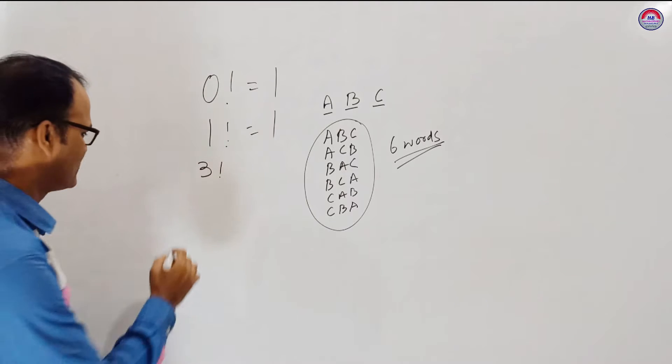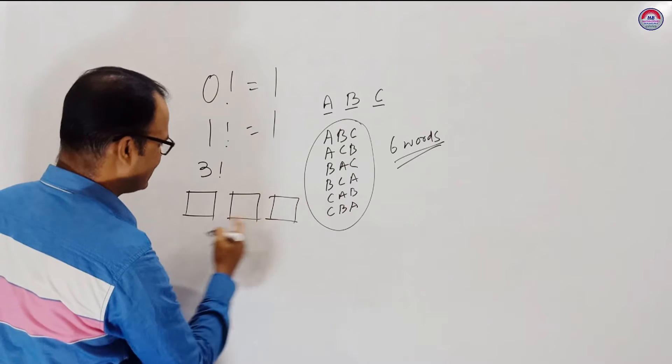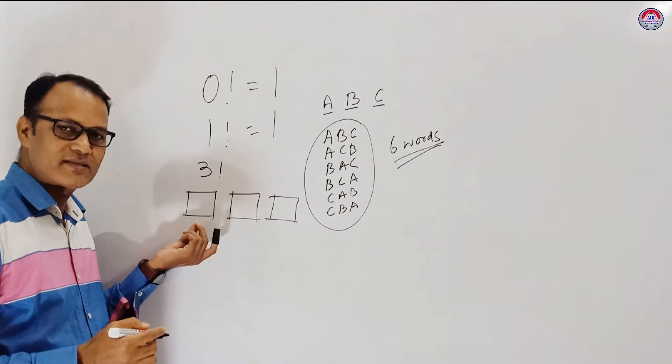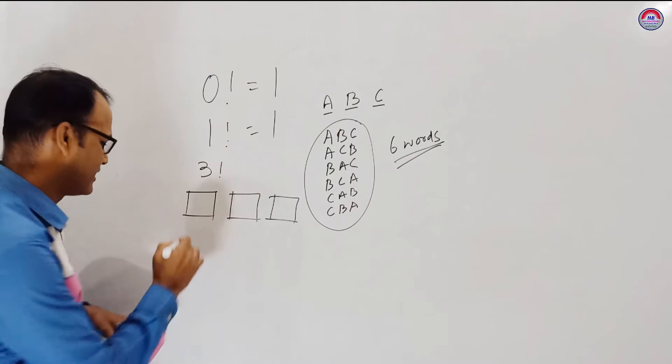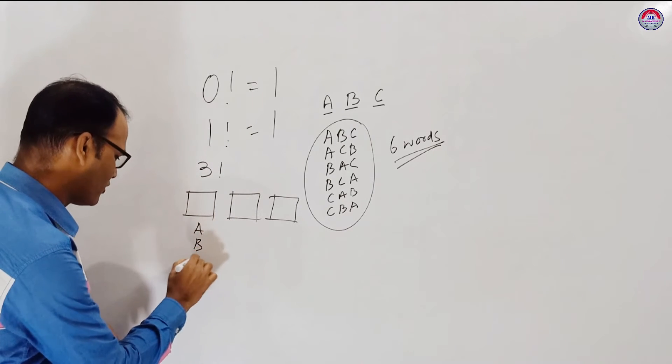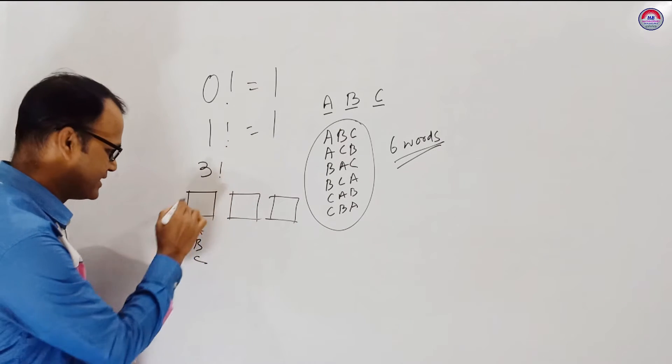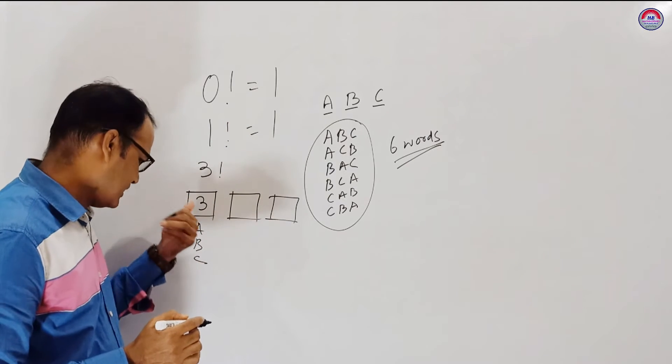Factorial means three letters so we can write three factorial. What is that? Three factorial means suppose there are three places here to write a three letter word.